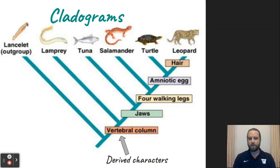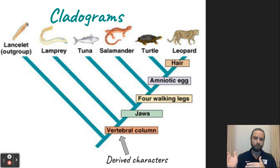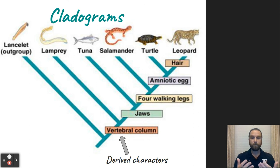Look at cladograms — this is a type of chart you'll need to be very familiar with. It shows different organisms and their different derived characters, the characteristics they may share. The more derived characters that organisms share, the more closely related they are, and the more recent their common ancestor was.